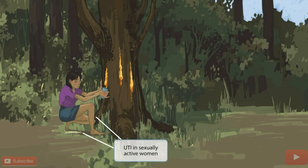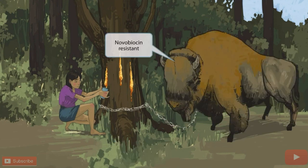She appears a bit frightened, which is why she urinated. Because there's a massive bison who appears to be guarding the tree. Luckily, the bison is tied up with his chain. We've included the bison to help you remember that Staph saprophyticus is novobiocin-resistant. The fact that the bison has a chain around him alludes to the idea that he's exerting a resisting force. So resistant bison for novobiocin-resistant.